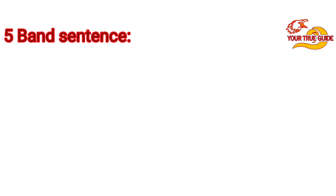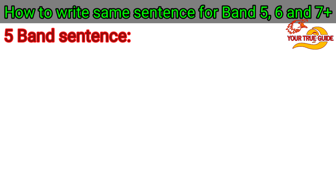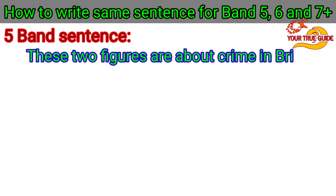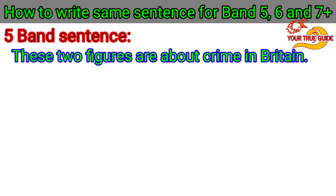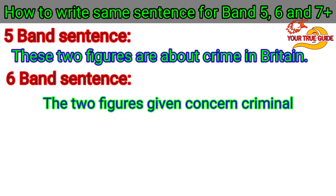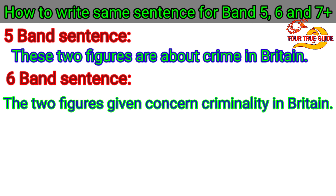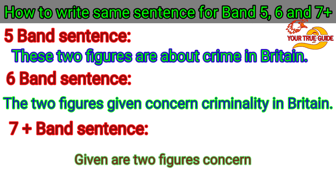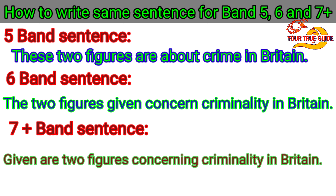Here the first sentence with 5 bands is: 'These two figures are about crime in Britain.' Now we will write the same sentence for band 6: 'The two figures given concern criminality in Britain.' Now we will see how we can write the same sentence for band 7 plus. Here we will make a continuous tense: 'Given are two figures concerning criminality in Britain.'